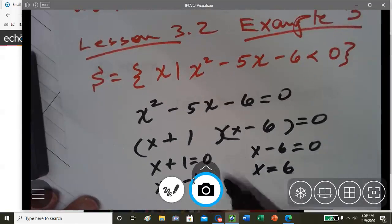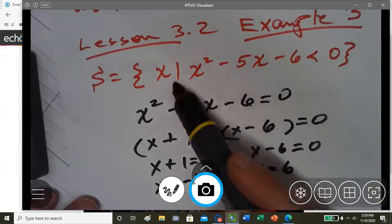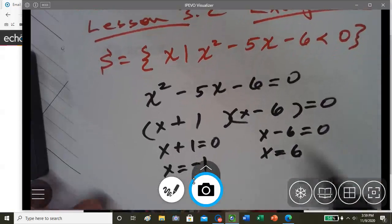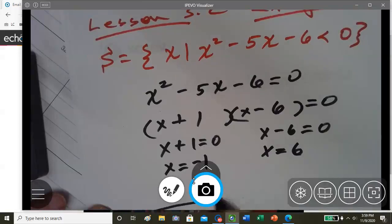Okay, so if we put a test point like 0 in here, we get negative 6 is less than 0. So our set...